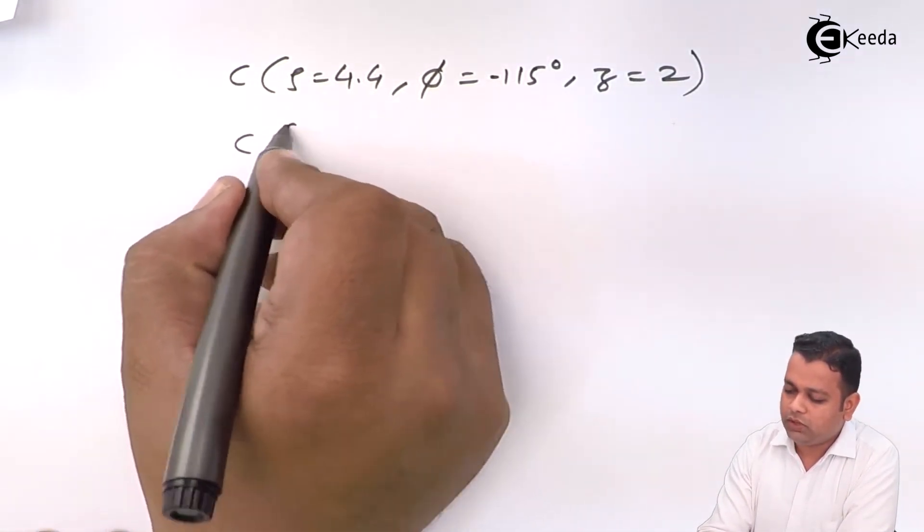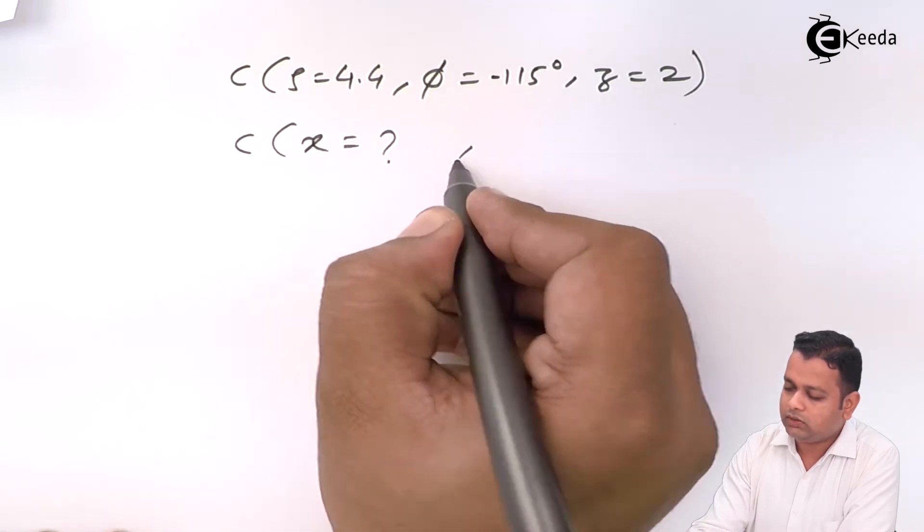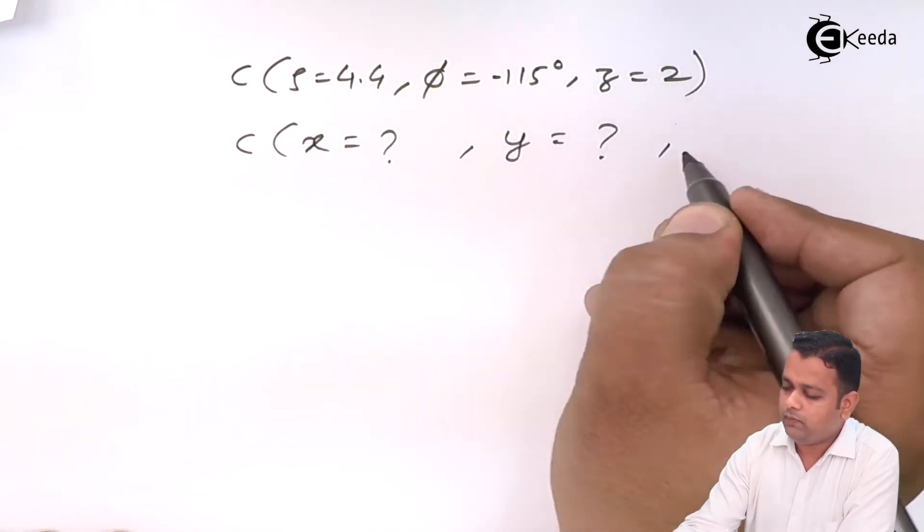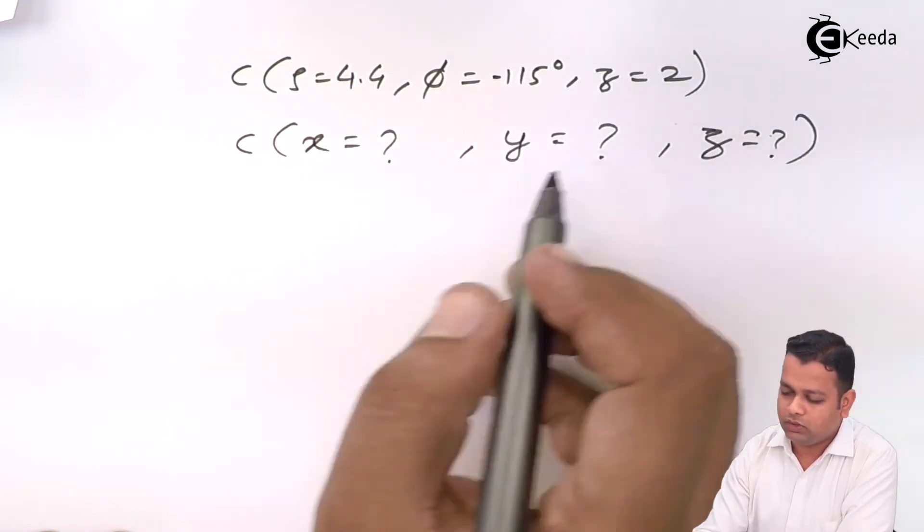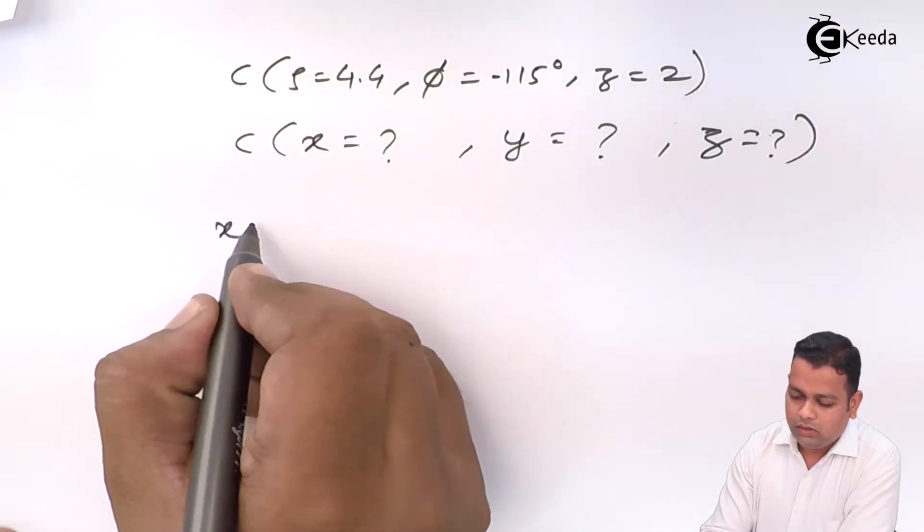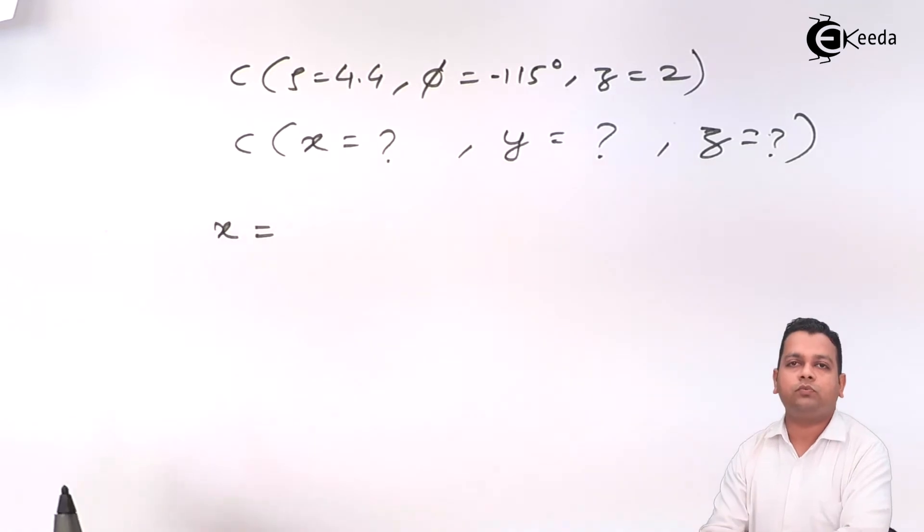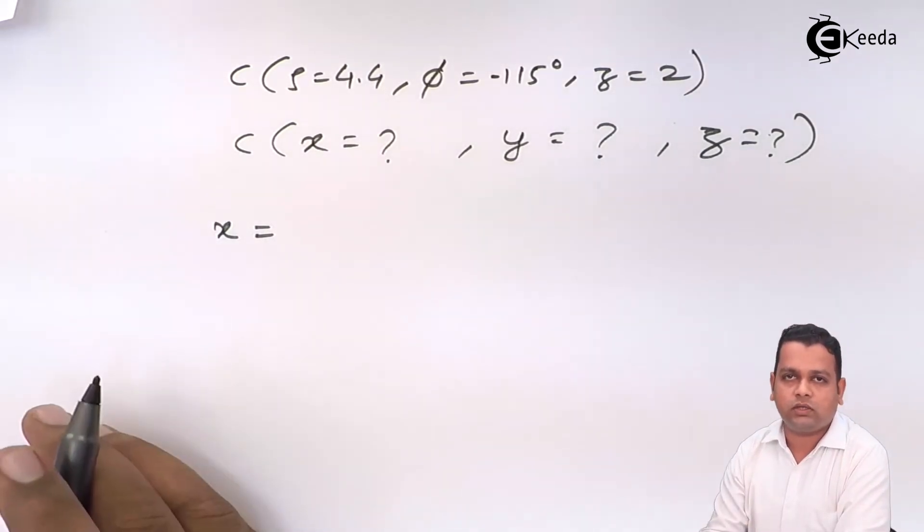So, we are supposed to determine what is x, what is y and what is z. So, z is common to us. Here, according to the transformation formulae, from cylindrical to rectangular and rectangular to cylindrical,